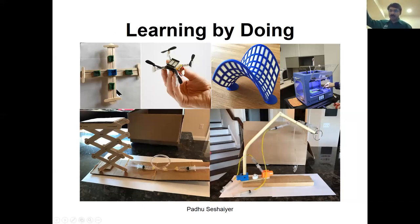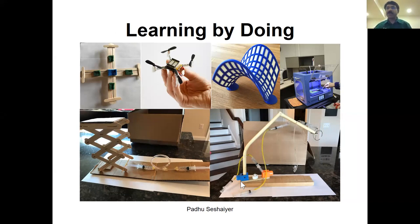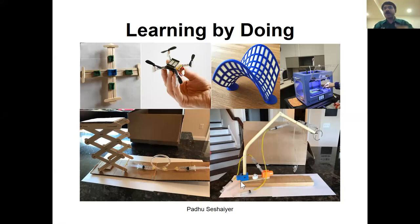Learning by doing — using simple resources to teach advanced concepts. You don't need to build an electronic robotic arm; you can build one with things found from dustbins and trash, like old syringes, and make it move. That's a robotic arm for under $1.